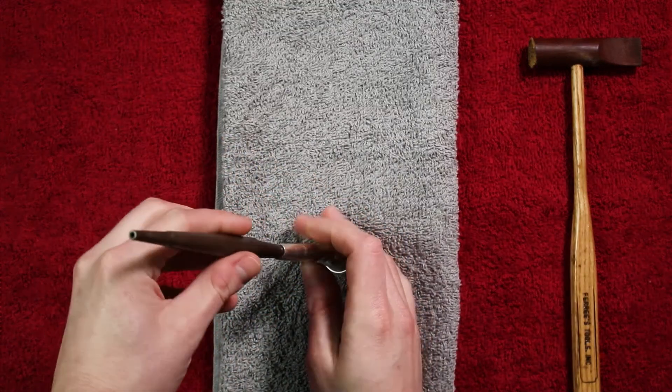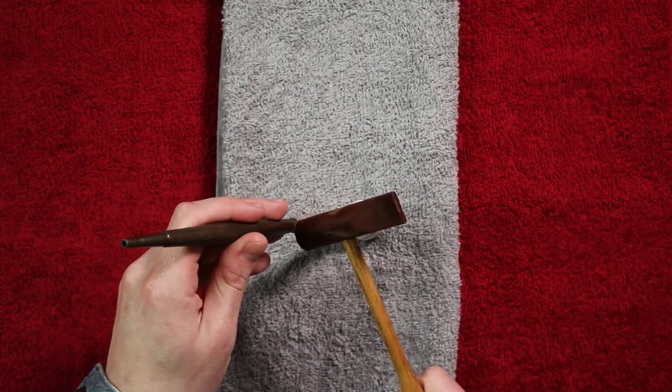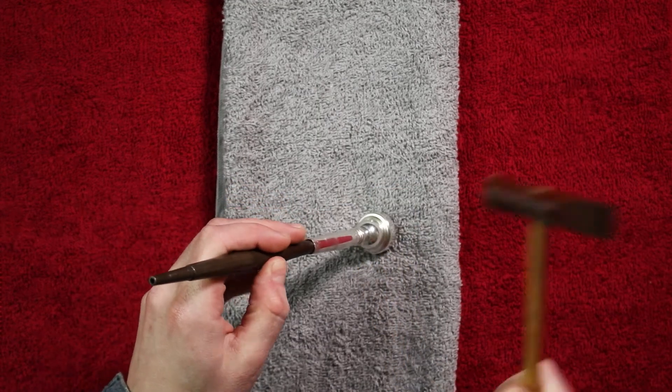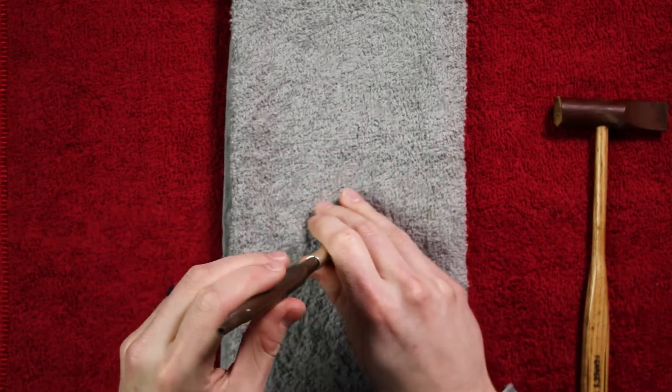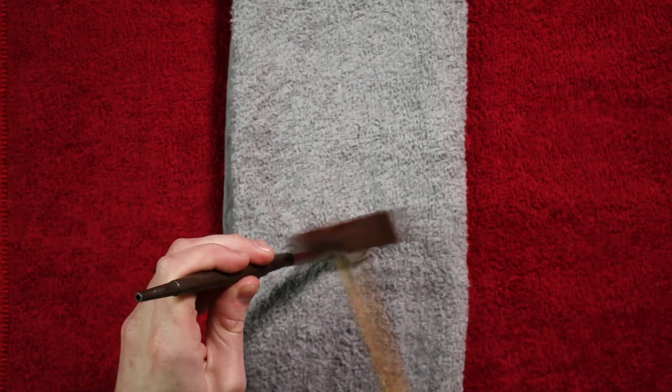Then, holding the mouthpiece and truing tool steady at an angle, begin to lightly hammer the end of the shank. Focus on the places that the shank does not touch the truing tool, trying to move inwards towards the damage from either side.